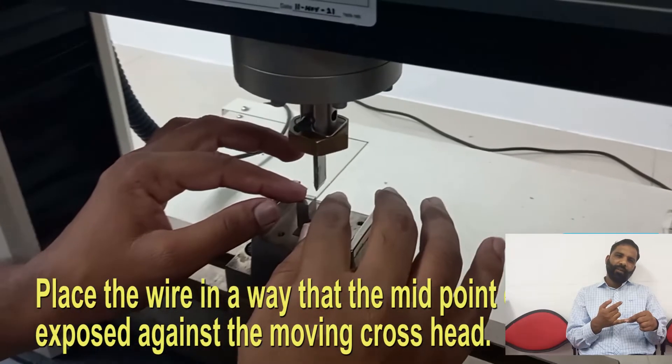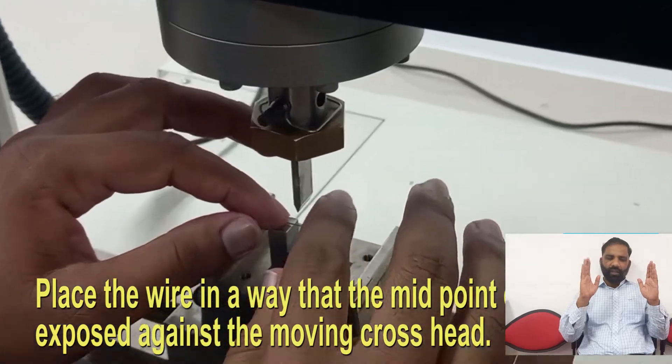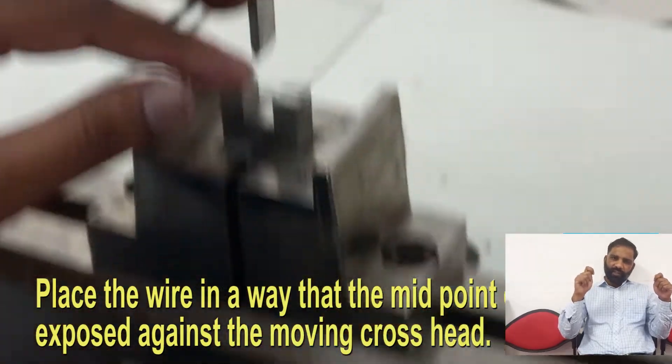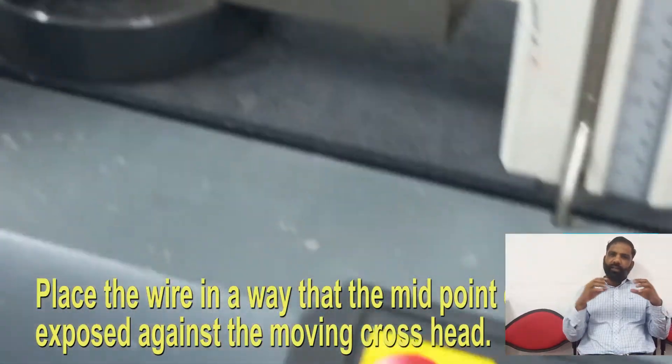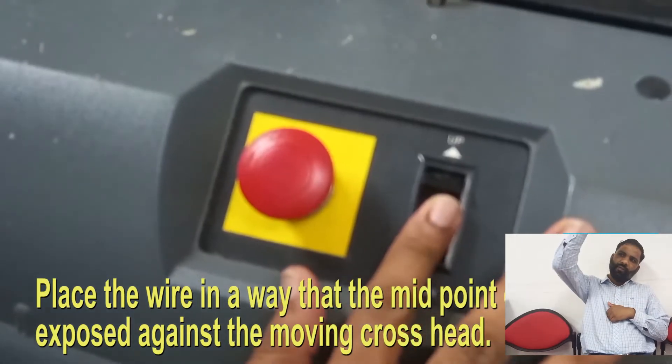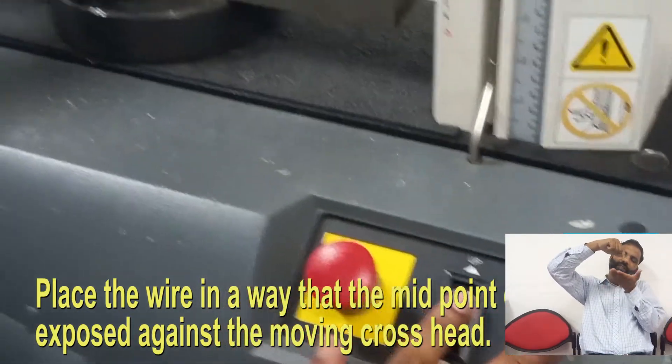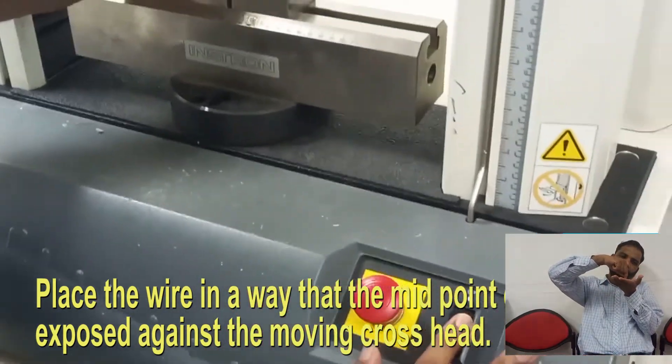We do three-point bending. In three-point bending we take a fixture where we put the arch wire and one indenter which slightly touches the wire.